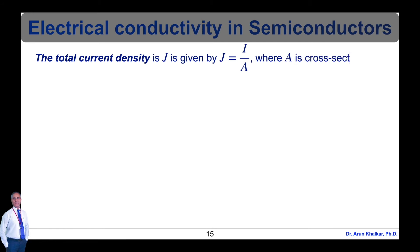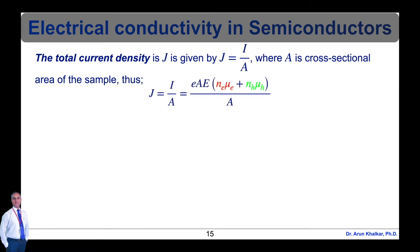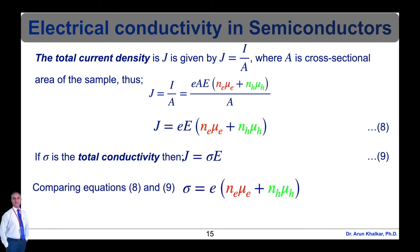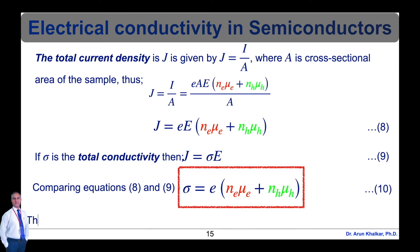The total current density J is given by J equal to I divided by A, where A is the cross-sectional area. Substituting the value of I from equation 7 and cancelling A, we get J equal to e·E times (n_e·μ_e plus n_h·μ_h), which is equation 8. If σ is the total conductivity, then J equal to σ·E (equation 9). Comparing equations 8 and 9, the electrical conductivity is σ equal to e times (n_e·μ_e plus n_h·μ_h), which is equation 10.